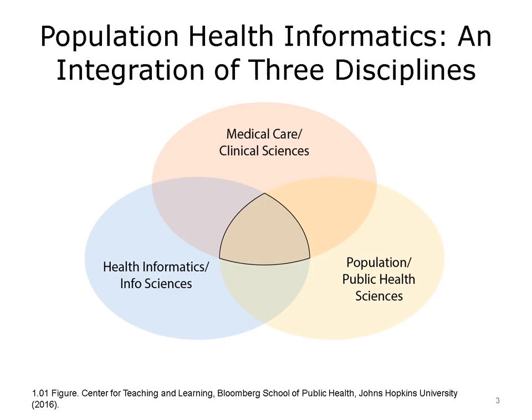The field of population health informatics is made up of three broad disciplines, represented by the three overlapping sectors of this Venn diagram. The first discipline, on the left, is information and data sciences. The second, at the top, is the basic clinical sciences, such as medicine and nursing. And the third, on the right, is the population health and public health sciences, which would include epidemiology, health policy, community health education, and the new field of population care management, developed first in managed care organizations such as HMOs.